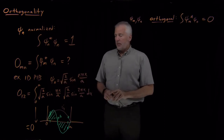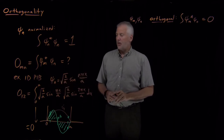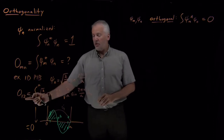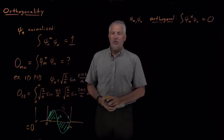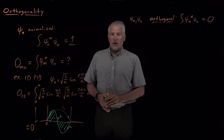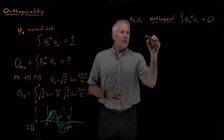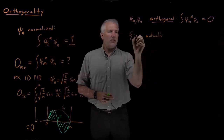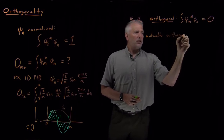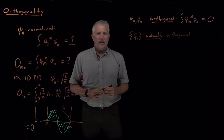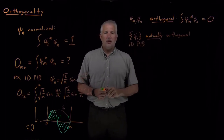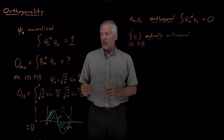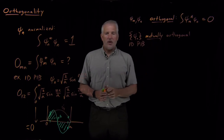We could continue with more examples for particle-in-a-box wave functions, but it turns out that whichever pair we choose — whether it's 1 and 2, or 1 and 3, or 1 and 4, or 2 and 3, or 2 and 4, and so on — any pair of different wave functions always turns out to be orthogonal. So the complete set of one-dimensional particle-in-a-box wave functions — psi sub 1, psi sub 2, psi sub 3, and so on — are all mutually orthogonal to one another. Any pair of different wave functions chosen from that set will be orthogonal; each one is orthogonal to all the others.